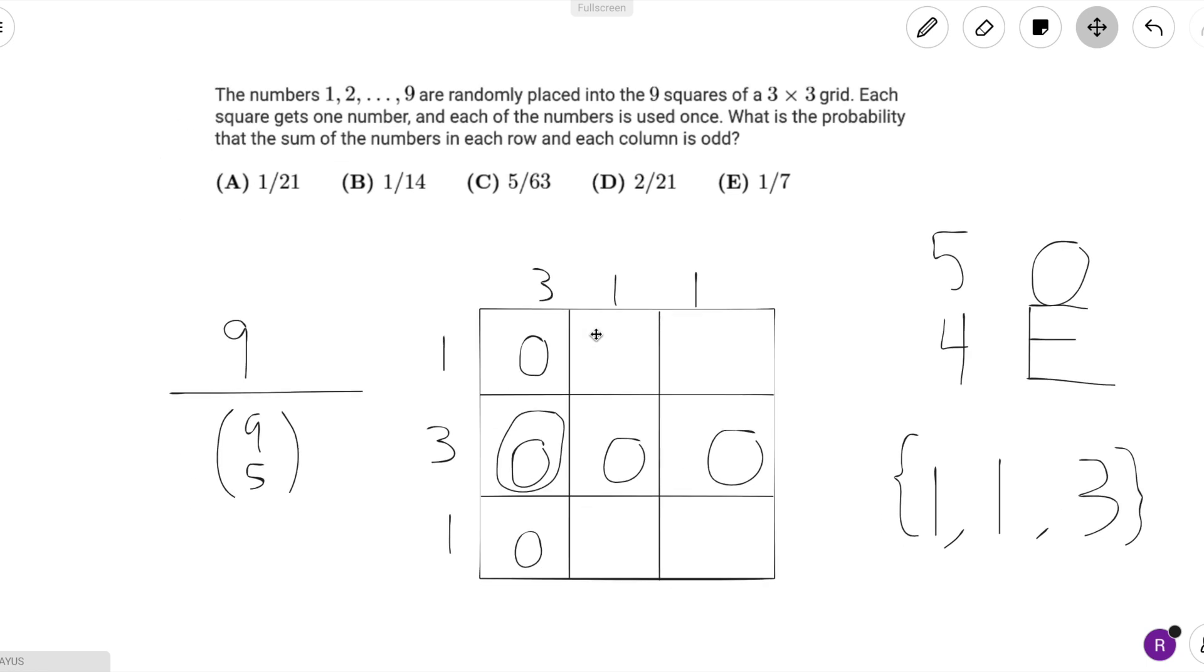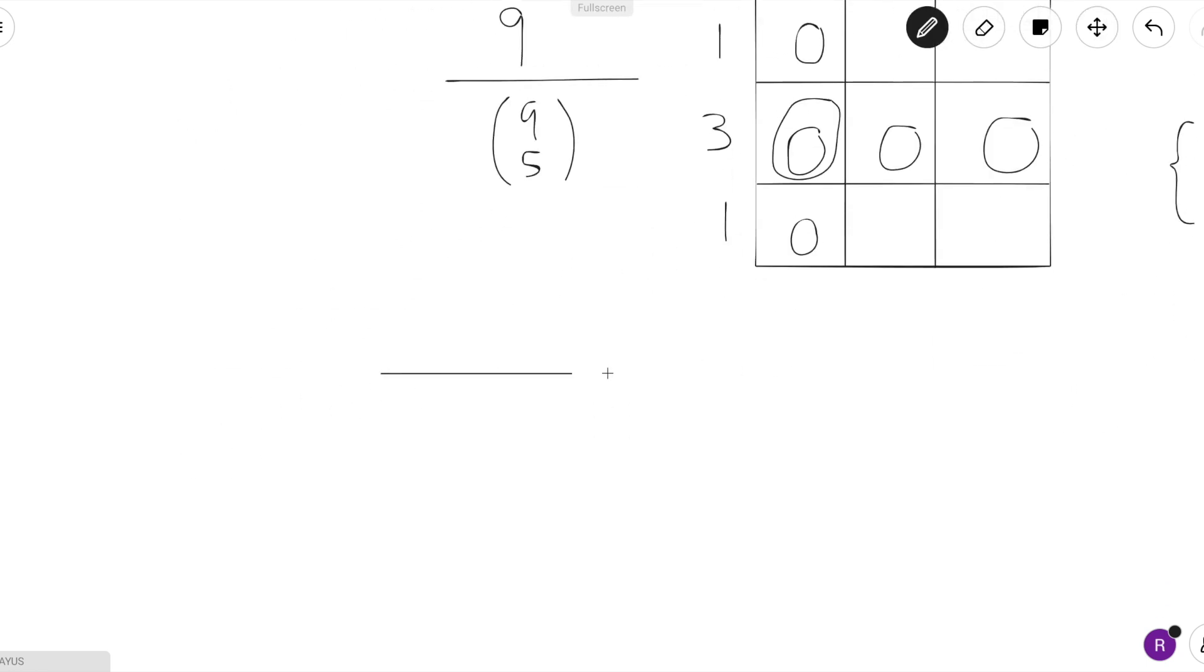So let's evaluate this fraction. We just get 9 over 9 times 8 times 7 times 6 times 5 over 5 times 4 times 3 times 2 times 1.